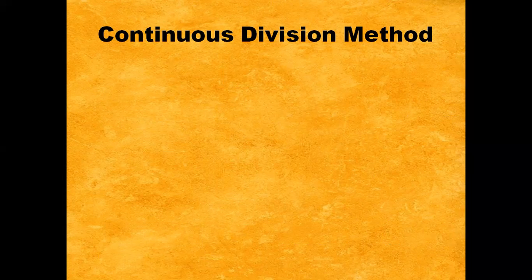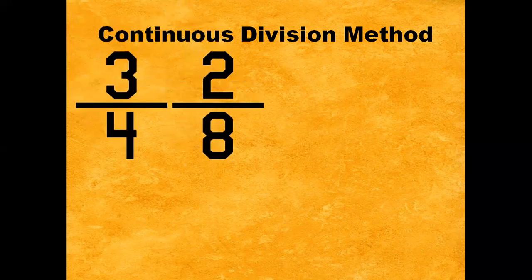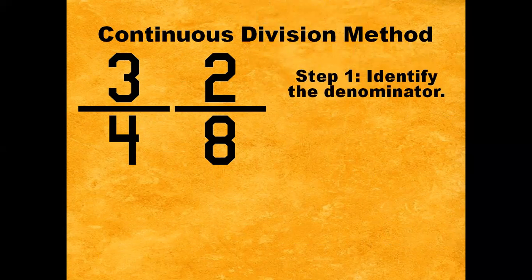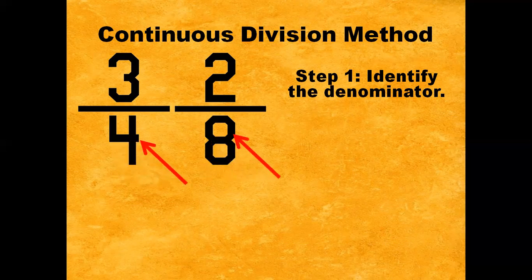Next method, we have the Continuous Division Method. For example, we have three-fourths and two-eighths. Step number one: identify the denominator. Three-fourths and two-eighths are dissimilar fractions because their denominators are not the same. For three-fourths, the denominator is four. For two-eighths, the denominator is eight.